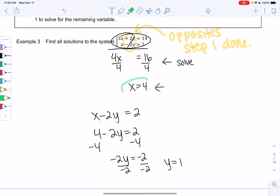So we got x equals 4, y equals 1. So our solution is 4 comma 1. And that's elimination.